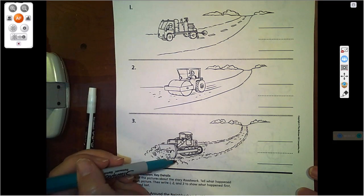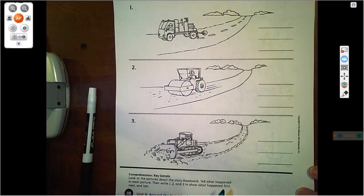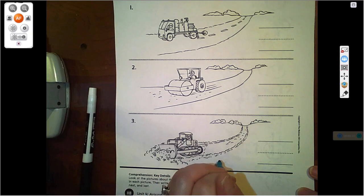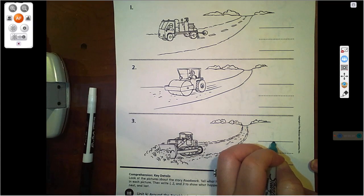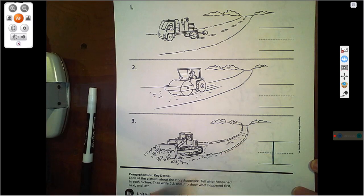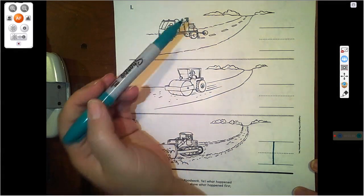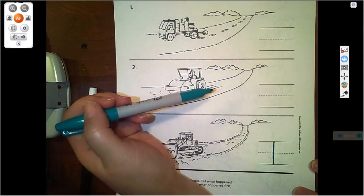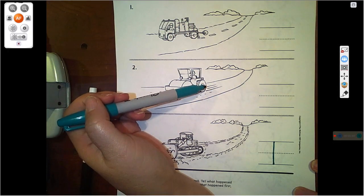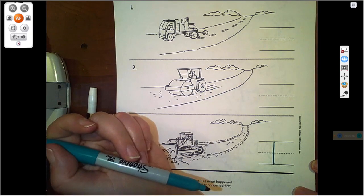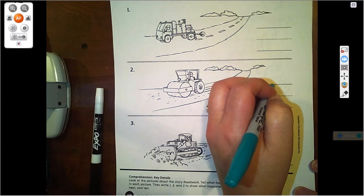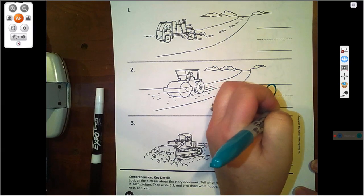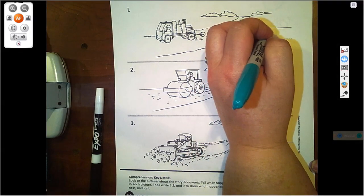Or did they move the dirt? They had to move the dirt, move the earth first, didn't they? So we need to write a one here because that happened first. What happened next? Did they paint the lines or did they smooth out the tar? They smoothed out the tar next, because last would be painting the lines.